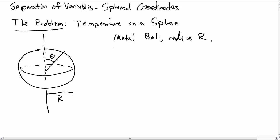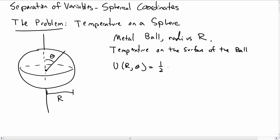Let's consider an example of separation of variables in spherical coordinates. The problem is we want to know the temperature in a sphere — some metal ball with radius R — and the temperature on the surface is already given. The temperature on the surface of this ball of radius R is given by u(R, θ) = ½u₀(1 + cosθ), where u₀ is some constant temperature.